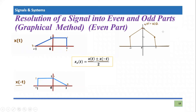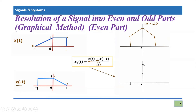But for the even part, we don't just need to sum them up — we also need to divide by two. Remember, this factor of two is in the denominator. So we have to divide this graph by two. Let's take one more graph to plot x_e(t), the even part. At t = -1, x(t) + x(-t) is one, and one divided by two becomes half, so x_e(t) at t = -1 is 0.5.